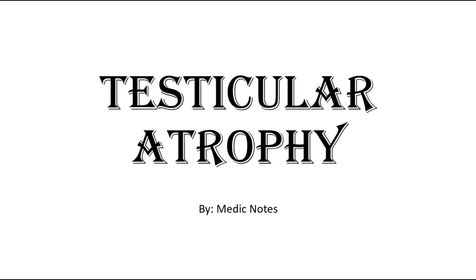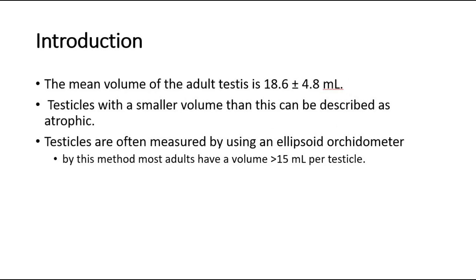Hi and welcome back to another video of Medic Notes. This video is on testicular atrophy. For introduction, the mean volume of the adult testis is 18.6 plus minus 4.8 milliliters. Testicles with a smaller volume than this can be described as atrophic. Testicles are often measured by using an ellipsoid orchidometer. By this method, most adults have a volume of more than 15 milliliters per testicle.